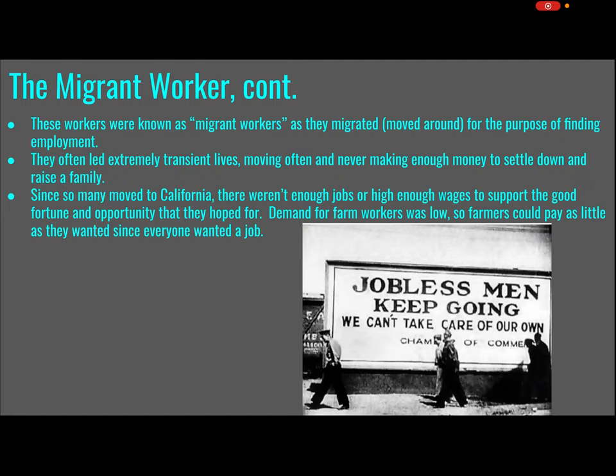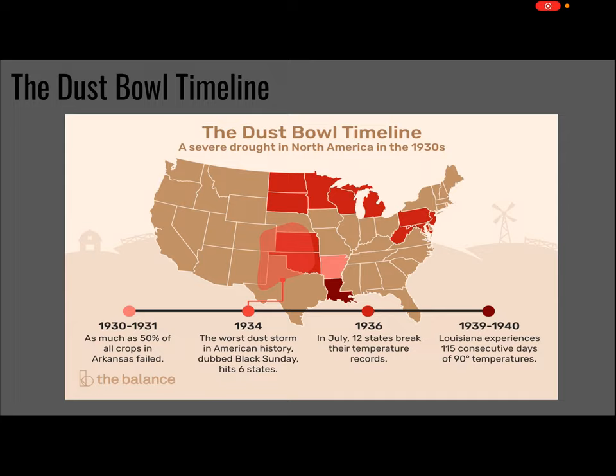These workers were known as migrant workers — they moved around for the purposes of finding employment and often led extremely transient lives, meaning moving often. They never made enough money to really settle down and raise a family. Since so many moved to California, there weren't enough jobs or high enough wages to support the good fortune they hoped for. Demand for farm workers was really low, so farmers could pay as little as they wanted since everyone wanted a job. There was even a billboard from a Chamber of Commerce saying 'go home' — they had too many workers for the jobs available, let alone people coming in from other towns.